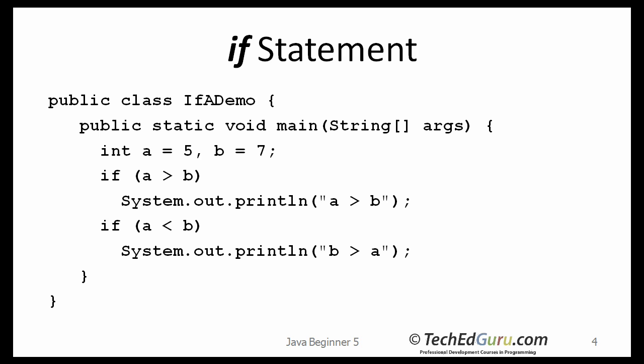Some programming languages consider zero as false and non-zero as true, but not Java. Java's Boolean type has no numeric equivalents. So let's look at this example — it is asking if a is greater than b. That expression is going to evaluate to either true or false, and if it is true, it's going to print that statement.